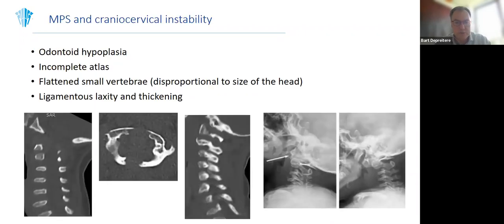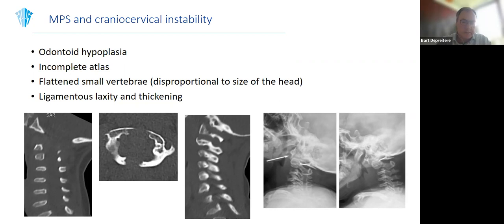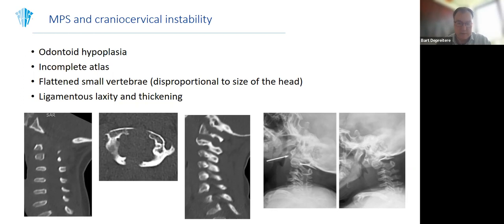The problem in the craniocervical junction has many components. Usually there is odontoid hypoplasia, an incomplete atlas, or it can be occipitalized to a certain extent, and the rest of the vertebral bodies are very flattened with distinct abnormal morphology. The vertebrae are very small yet must bear the weight of a head that is of normal size, while the trunk is really small — creating a disproportional load on these tiny cervical vertebrae. On top of that, there is ligamentous laxity and ligamentous thickening, so the organization of the ligaments is not normal.